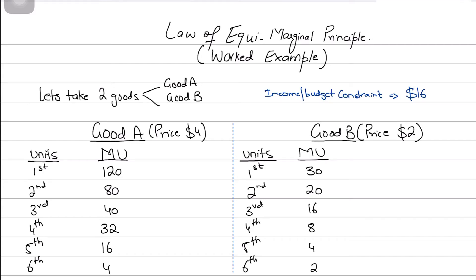Hi guys, I hope you're doing well. In this video we're going to be solving a worked example on the law of equi-marginal principle. In the last video we discussed what the equi-marginal principle was — it's basically applicable when we are trying to find the optimum combination or optimum bundle of goods with a limited fixed income, which is our budget constraint.